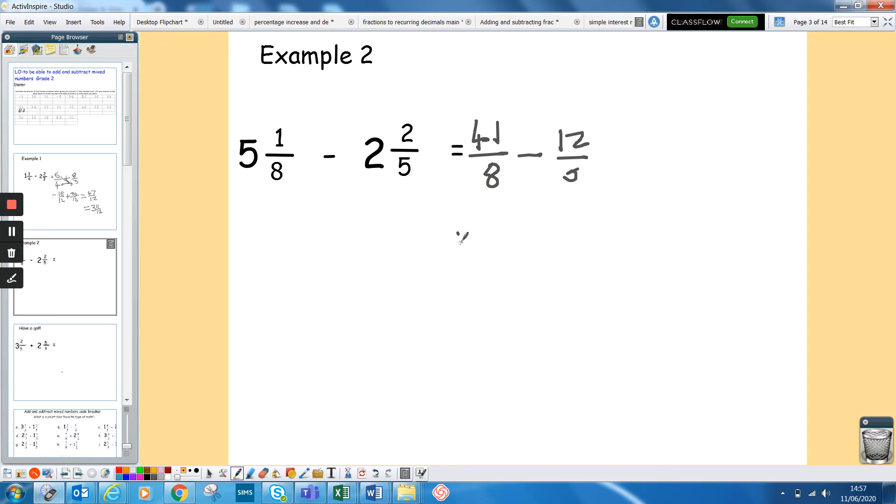Again get the common denominator, multiply the bottom two together, eight times five is 40. And we're doing minus this time, so let's make sure I've got that minus in. And then cross-multiply, so 41 times five, 205. Remember this would be on a non-calculator paper, so you need to make sure. Eight times 12 is 96. Just because it's subtracted, then you subtract the top, so 205 minus 96 gives you 109 over 40.